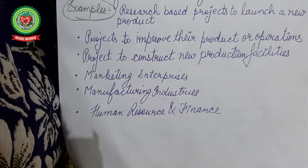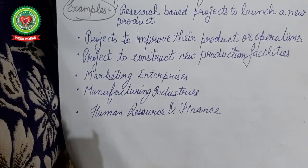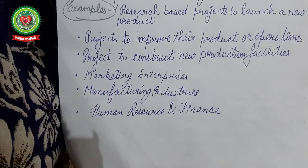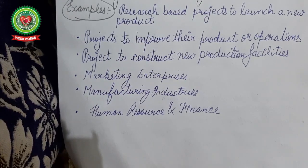The production department creates the product, the human resource department manages the workforce, the marketing department conducts surveys to gauge customer interest in new products, and the promotion or research department promotes the product in society. Other areas include projects to improve product impression, construction of new production facilities, marketing enterprises, manufacturing industries, and human resource and finance departments — all following a top-down hierarchical approach known as functional organizational structure.